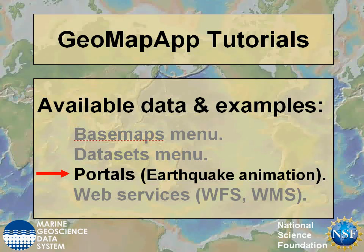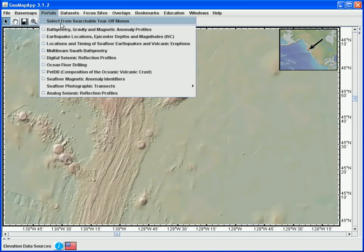In this GeoMap App tutorial on available data, we'll look at an earthquake animation in the portals menu. Let's look at the NOAA P-MAL earthquake catalogue for a section of the Juan de Fuca Ridge.